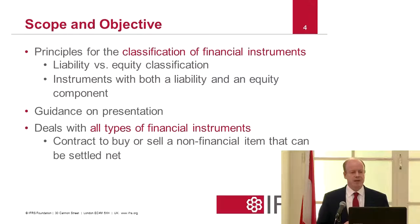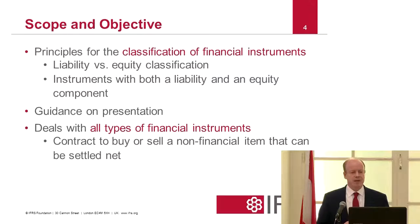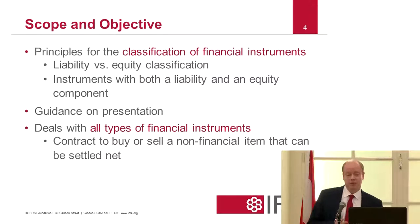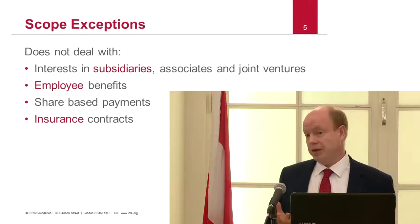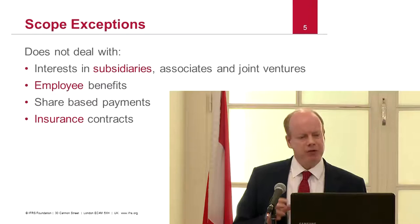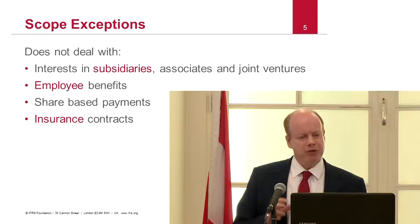We look at liabilities versus equities, and we'll also be considering instruments which have both a liability and an equity component. This standard provides guidance on presentation and deals with all types of financial instruments. There are some scope exceptions: IAS 32 does not deal with interests in subsidiaries, associates and joint ventures, employee benefits, share-based payments, and insurance contracts.